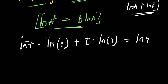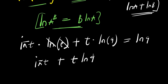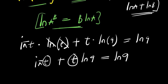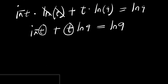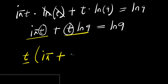The natural log of e is 1, so we have i times pi times t plus t times natural log of 9 equals natural log of 9. Here we have t and here we have t, so I can factor that out. Taking out the t, we have t times the quantity i times pi plus natural log of 9, and this equals natural log of 9.